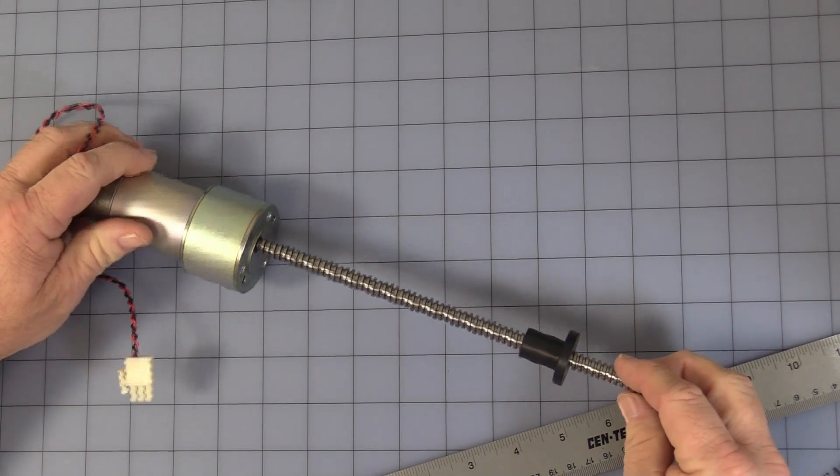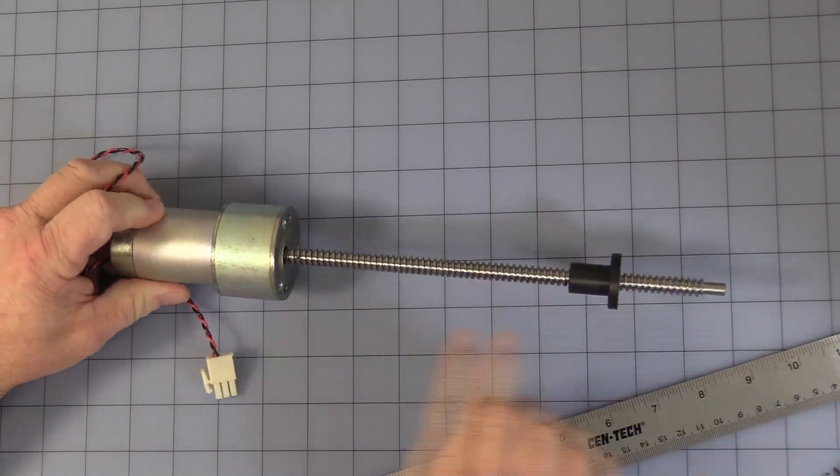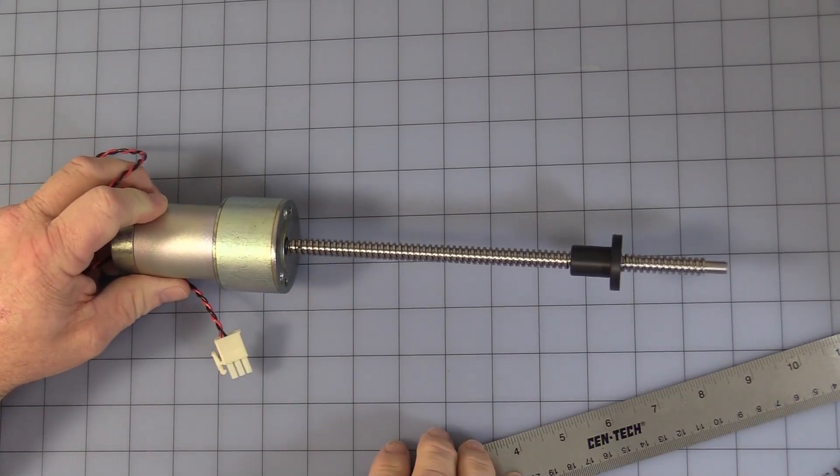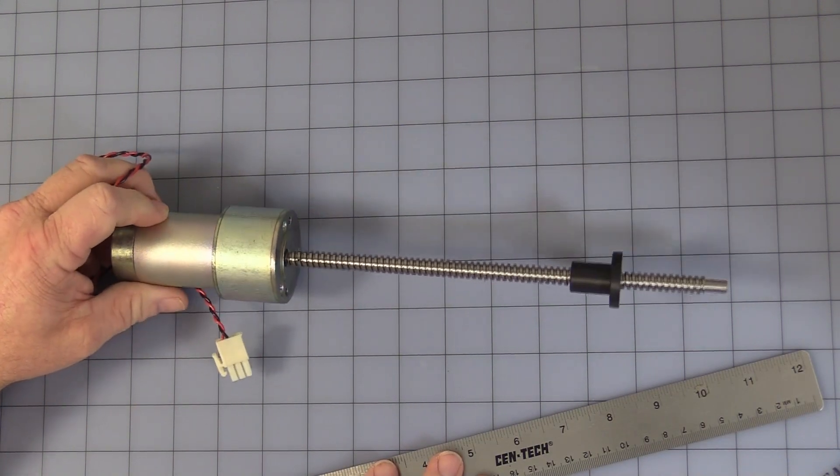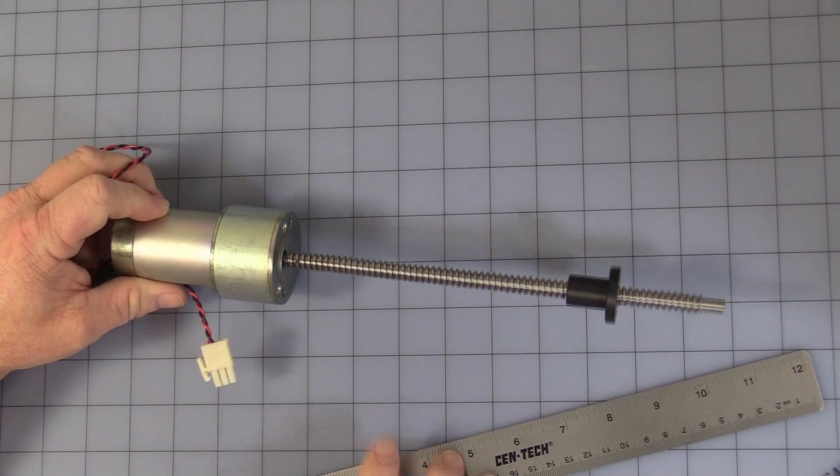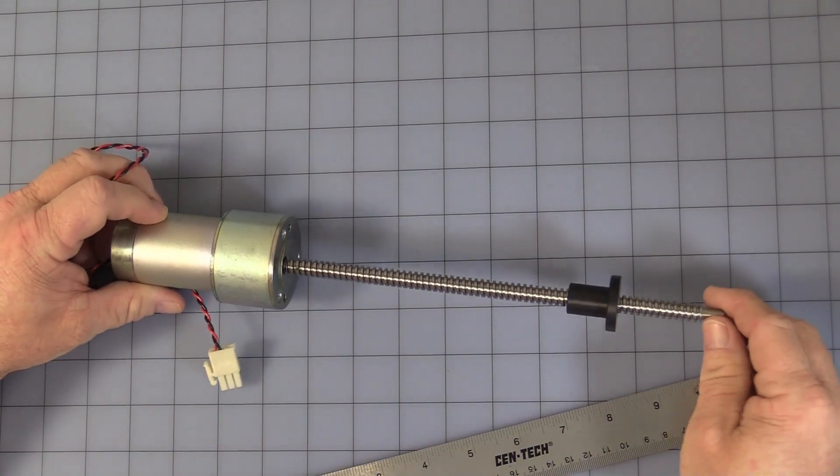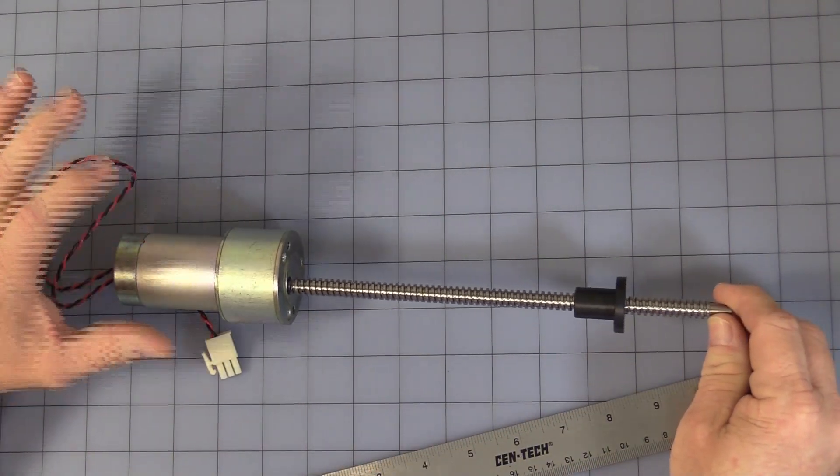The lead screw we do say is not removable, but there is a very small roll pin. If you have access to a quality machine shop, you probably could press it off and take off the lead screw, but I really wouldn't recommend it. It's not that easy to do.